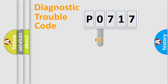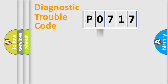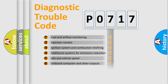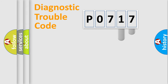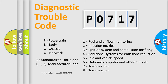This distribution is defined in the first character of the code. If the second character is expressed as zero, it is a standardized error. In the case of numbers 1, 2, or 3, it is a more specific expression of a car-specific error. The third character specifies a subset of errors. This distribution is valid only for the standardized DTC code, and only the last two characters define the specific fault of the group.